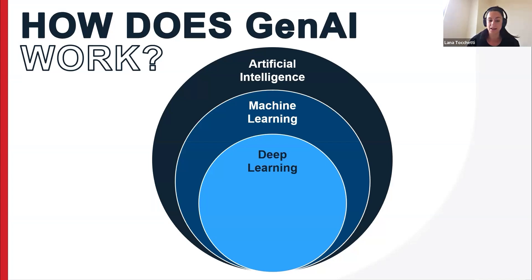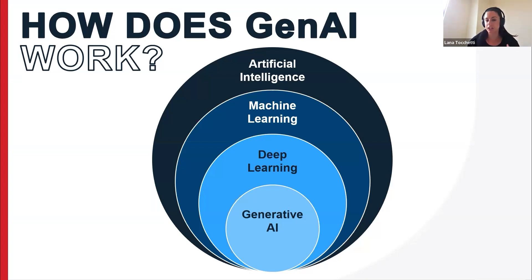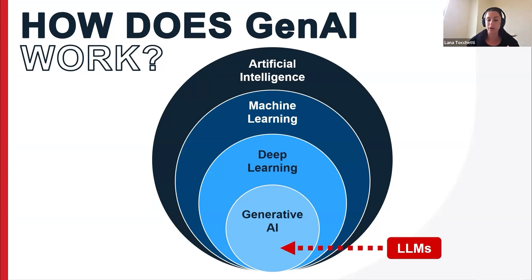The next level is called deep learning, which uses artificial neural networks with many different layers, allowing the system to discover more complex patterns and continuously refine its understanding of language and ability to generate responses. Then you have generative AI, which can create new content by learning to recognise and replicate patterns in data using those deep learning models. When these deep learning systems are used for language, they're called large language models — like ChatGPT or Claude — and that sits within the Gen AI space.